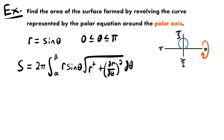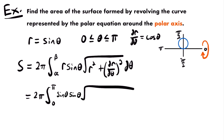Plugging everything in: S = 2π ∫[0 to π] sin θ · sin θ · √(sin²θ + cos²θ) dθ. Simplifying, sin θ times sin θ gives sin²θ, and we square each quantity under the radical to get sin²θ + cos²θ. This equals 2π ∫[0 to π] sin²θ · √(sin²θ + cos²θ) dθ.